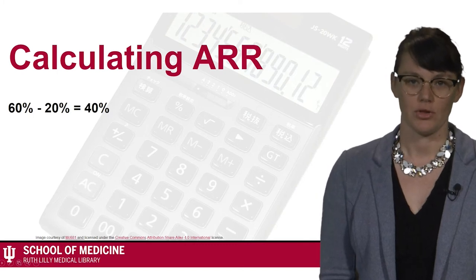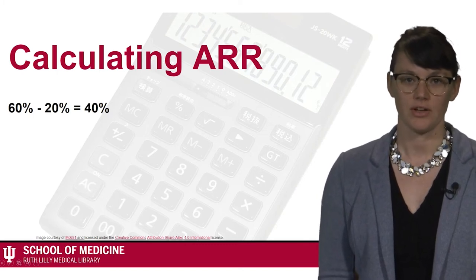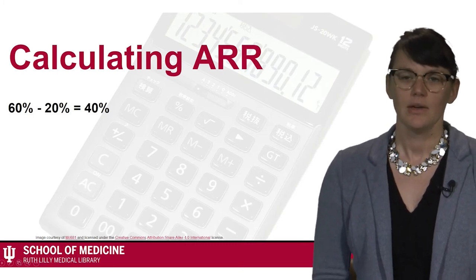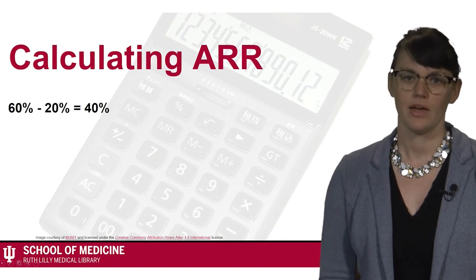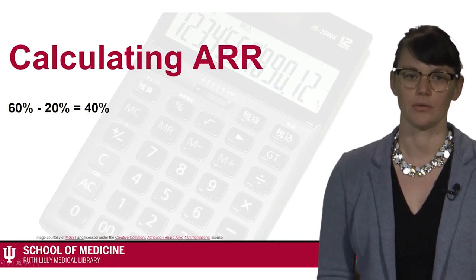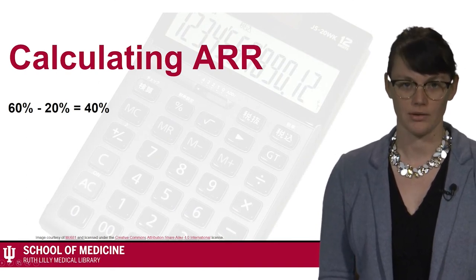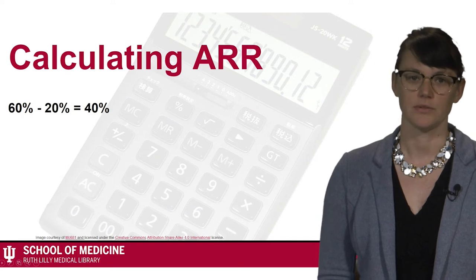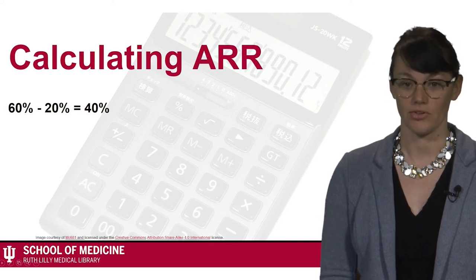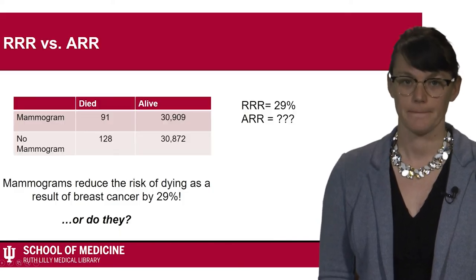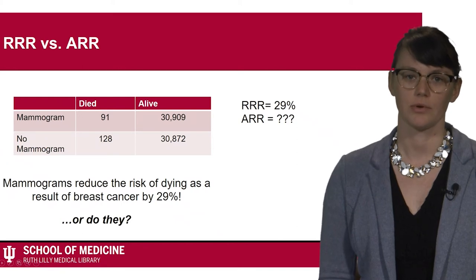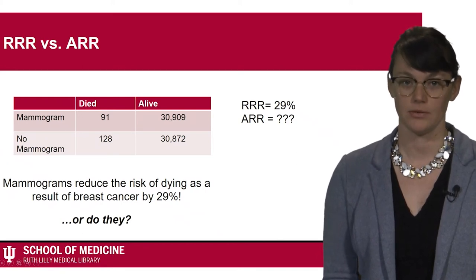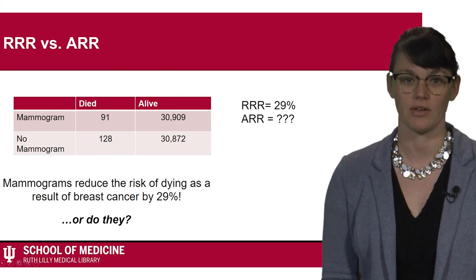What is the absolute risk reduction in our drug study? If the risk in the control group is 60% and the risk in the experimental group is 20%, the ARR works out to be 40%.